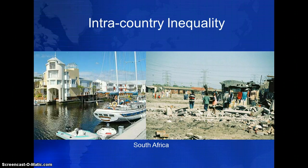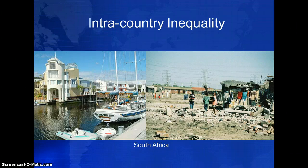Intra-country inequality is also increasing. Today, there are neighborhoods in the Global South that would easily fit into the wealthiest suburbs of the United States, and there are pockets of poverty in the United States that would be at home in the Global South. Such poverty and inequality have real implications — countries with higher levels of economic inequality usually have shorter overall life expectancies and lower adult literacy rates.